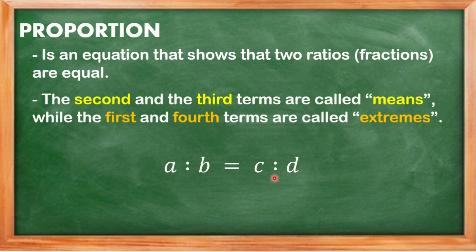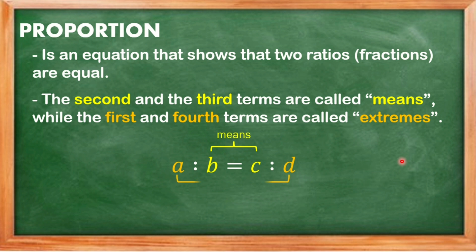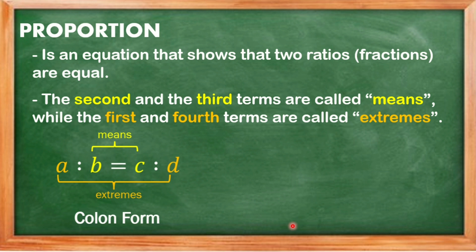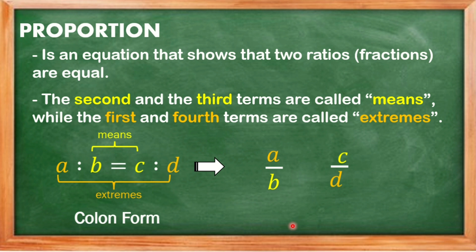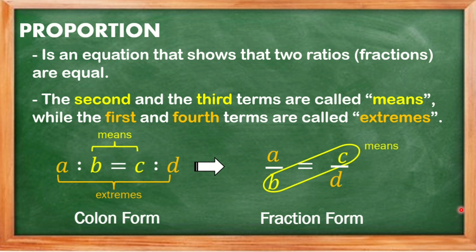The second and third terms are called the means, while the first and fourth terms are called the extremes. So B and C are the means, and A and D are the extremes. This whole thing is what we call the colon form of proportion. We also have the fraction form of proportion, where the second and third terms are still the means and the first and fourth terms are still the extremes. It's important to identify the means and extremes whether in colon form or fraction form.